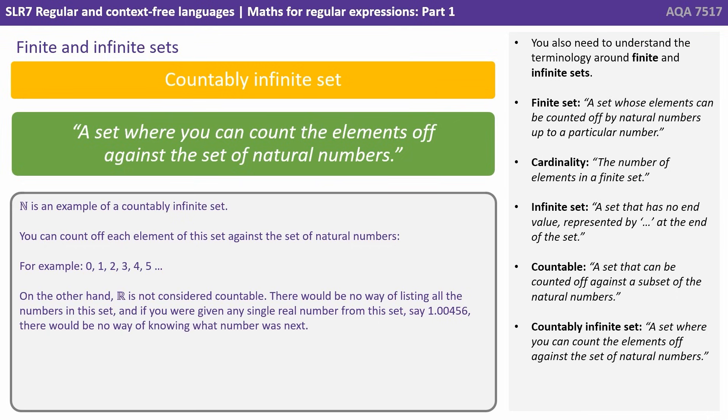So finally, we have the term a countably infinite set. This is a set where you can count the elements off against the set of natural numbers. N is an example of a countably infinite set. You can count off each element of the set against the set of natural numbers.